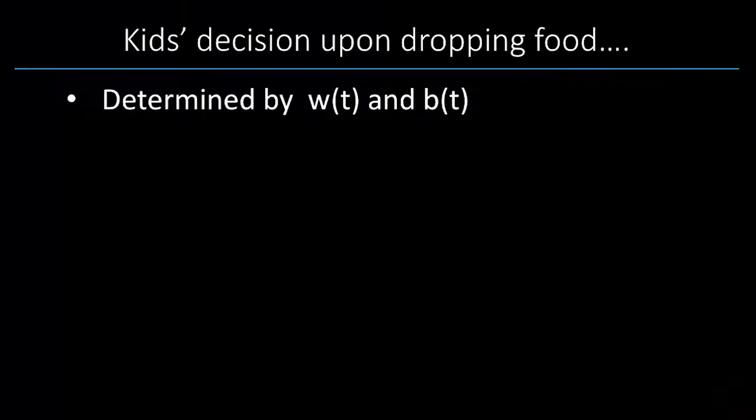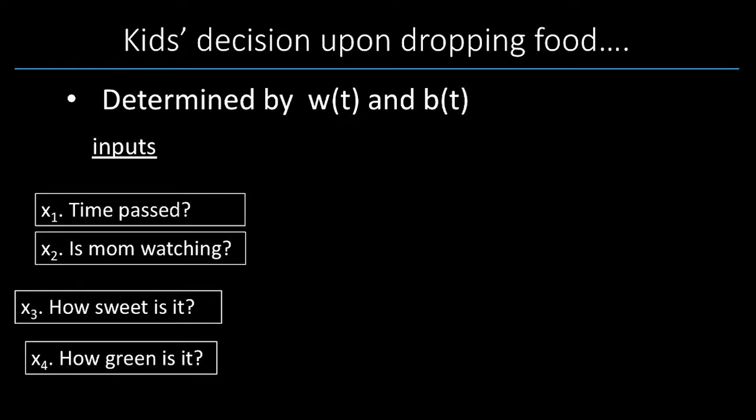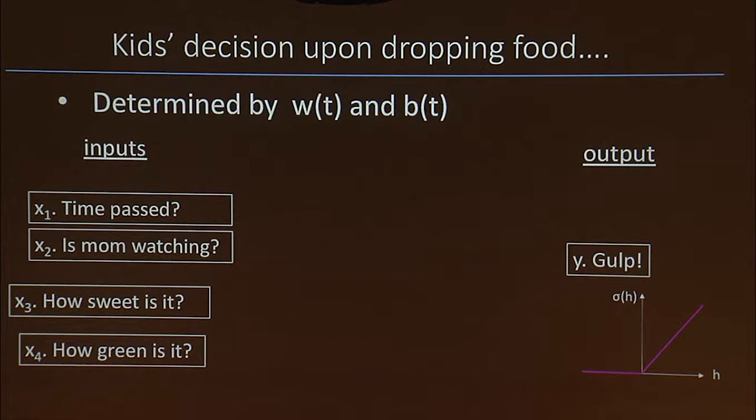So, this kid dropped food and has to make a decision about what he or she is going to do about it. And the decision is determined by weights and biases. First of all, the kid will take input through the sensory part, how long it has been, is mom watching—I'm the bad cop in the family—how sweet is it, how green is it. I'm labeling each of these inputs as a vector because they are treated as an input vector. Now, there will be the output, the decision the child makes, whether to pick up the food and eat it or let it be. And this decision making is essentially a function that takes this input vector and maps out to this output space.